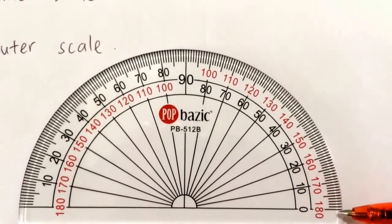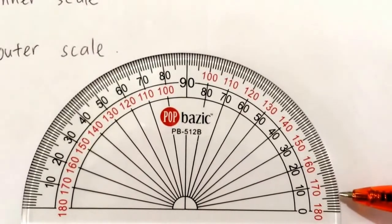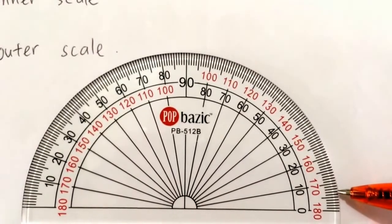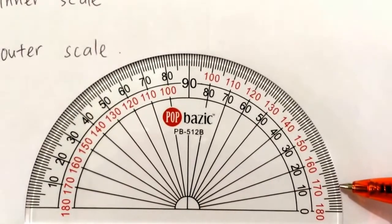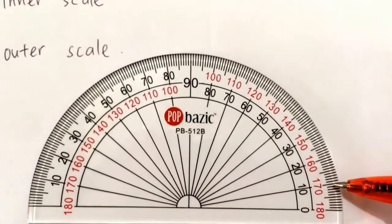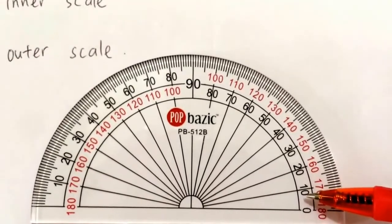For example, this is 0, 1, 2, 3, 4, 5, 6 will be here, 7, 8, 9, 10. This is not 170, this is 10, because I am reading from the inner scale.